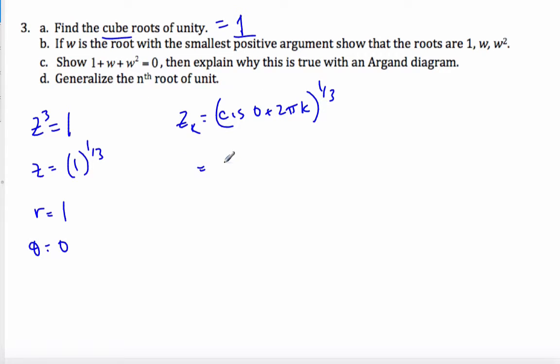And so simplifying that, I get cis 2πk over 3.